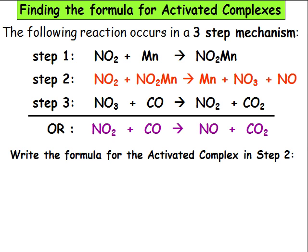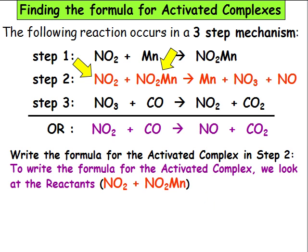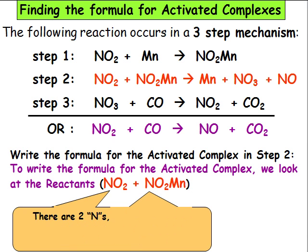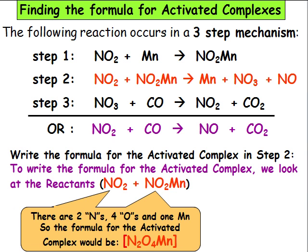Sometimes we are asked to write the formula for the activated complex in a given step of a mechanism. In this example, we are asked for the formula of the activated complex in step 2. Remember, an activated complex can also be called the transition state. To write the formula for the activated complex, we look at the reactants NO2 + NO2MN. We just take all of the reactant atoms and put them all together into one species: there are two Ns, four Os, and one MN. So the formula for the activated complex would be N2O4MN.